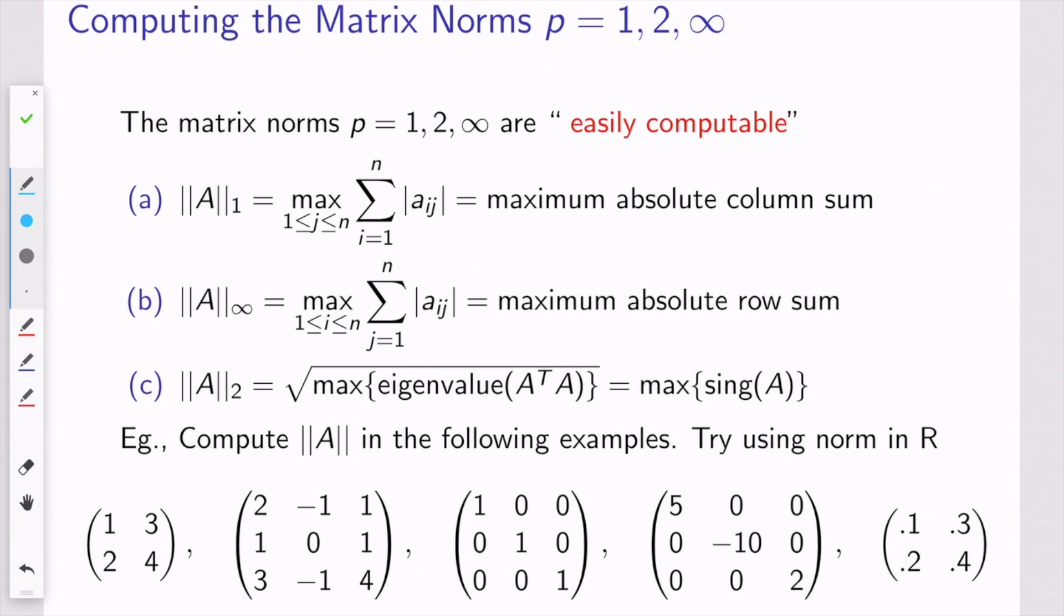So how do you actually practically compute these matrix p-norms, like the 1 and 2 and infinity norm? Well, I'm focusing on these because these are the ones that are most easily computable. I'm going to give you some definitions, and I just want to say these definitions should not be obvious to you. It takes a little bit of work to prove these things. I would like you to at least understand the definitions and be able to use them. And if you're interested in seeing proofs, you can contact me and I can point you to resources.